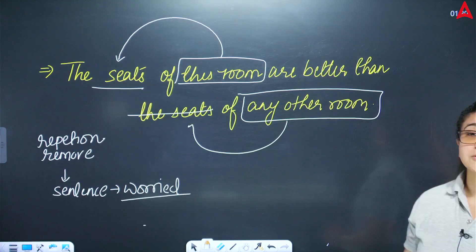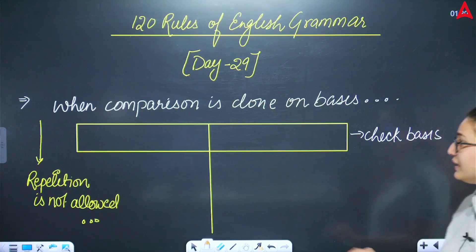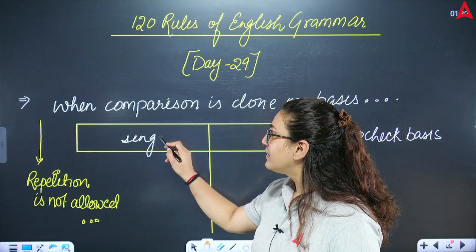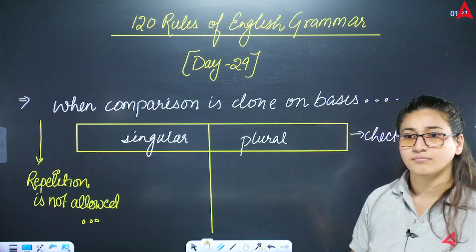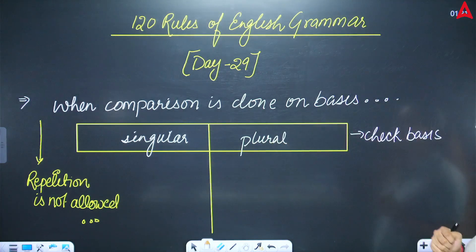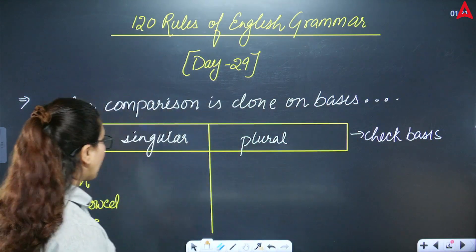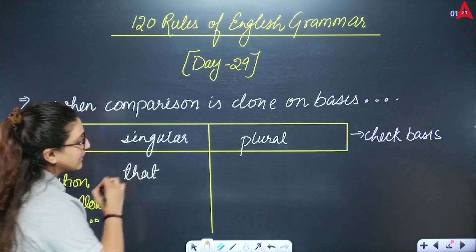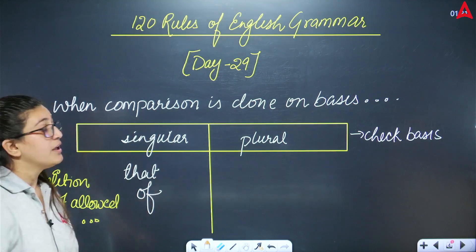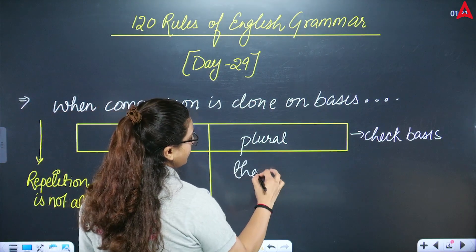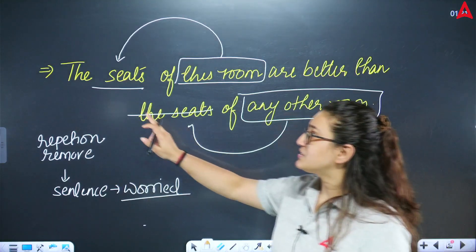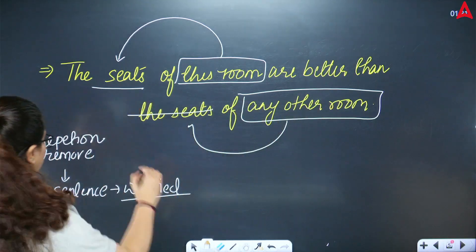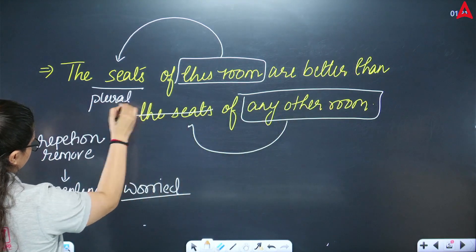In the basis, you check whether it is singular or plural. Here you check that the basis is singular or plural. When you check the singular and plural basis, there is specific information. Go back to the sentence — I have written 'seats.' Seats are plural.